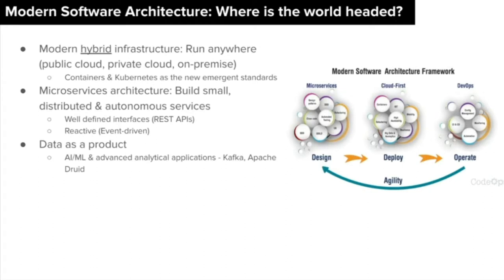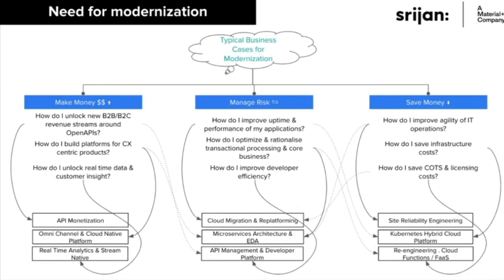A couple more things have become even more mainstream in the last three or four years. API-first: rather than APIs being an add-on or auxiliary to existing systems, they have become the primary consideration when defining your architecture. There are also reactive or event-driven architectures, where any event happening in one place triggers something in a different system. And increasingly, data is seen as the new oil, with a lot of data products coming to market.